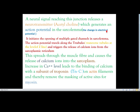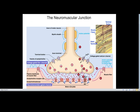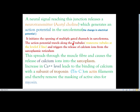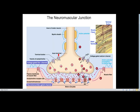The action potential is the change in electrical potential — an electrical impulse. It initiates the opening of multiple voltage-gated channels in the sarcolemma. The action potential travels along the T-tubules — transverse tubules at the level of the Z line — and triggers the release of calcium ions from the sarcoplasmic reticulum. The sarcoplasmic reticulum is the endoplasmic reticulum of muscle cells (sarcoplasm), and it stores calcium ions.